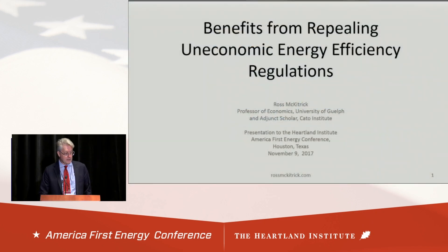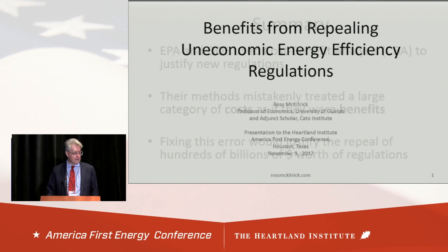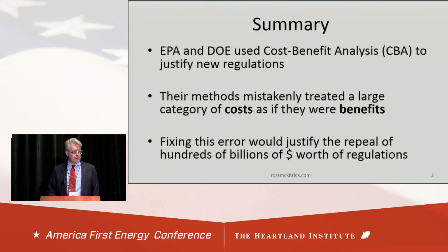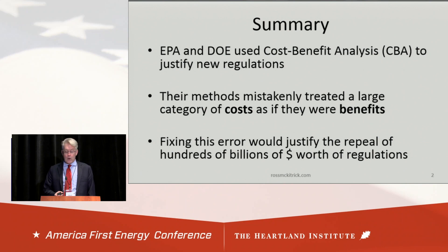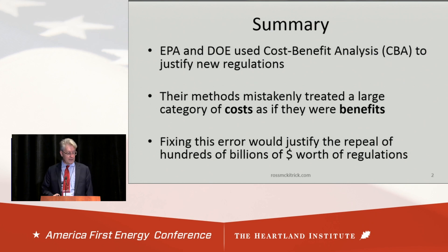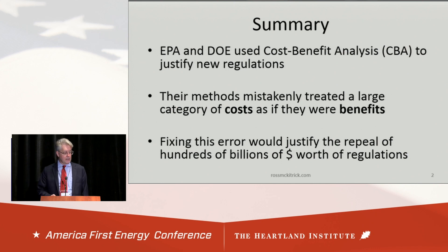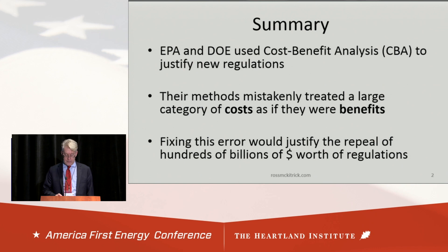Hi, I'm Ross McKittrick, pleasure to be here, thanks for the invitation. I'm going to go through some cost-benefit analysis methods that the EPA and the Department of Energy use to justify new regulations. The one point I'm going to make is that they mistakenly treat a large category of costs as if they were benefits. And fixing that error alone would justify the repeal of regulations that have cost hundreds of billions of dollars.